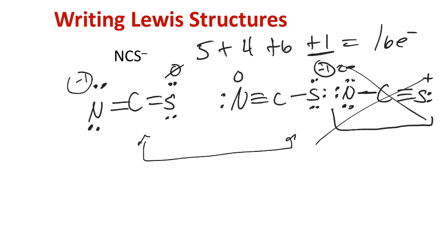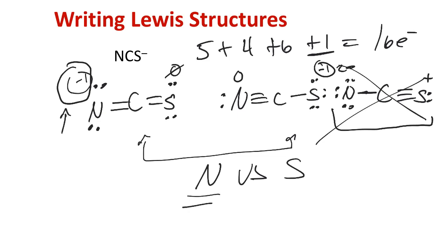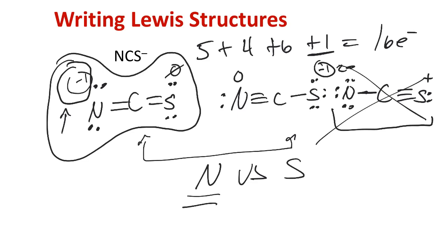When structures satisfy the octet rule equally but differ only in formal charges, we look at which atom has a higher electronegativity. We want more negative charges to end up on the more electronegative atoms. So for NCS⁻, the structure where nitrogen carries the minus one formal charge is preferred, because nitrogen is more electronegative than sulfur and is more likely to be the negatively charged atom.